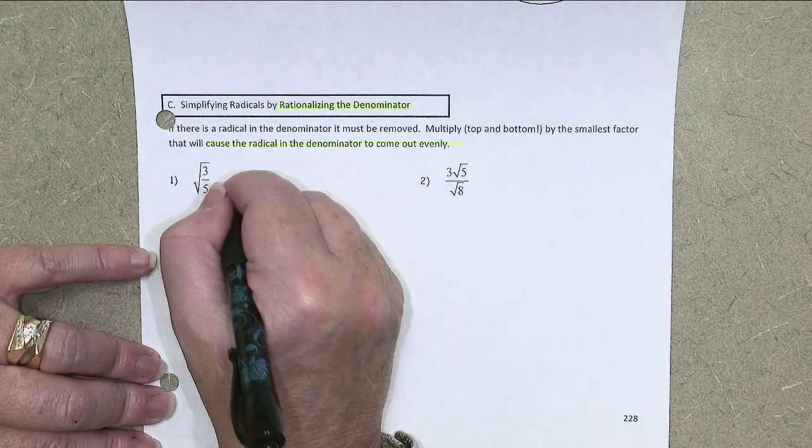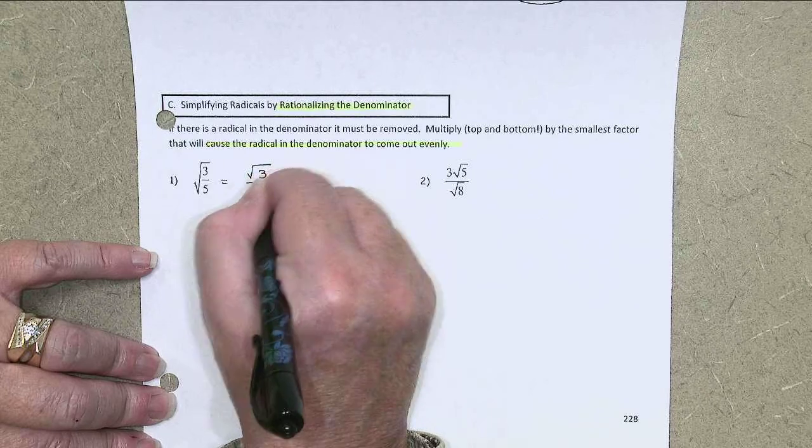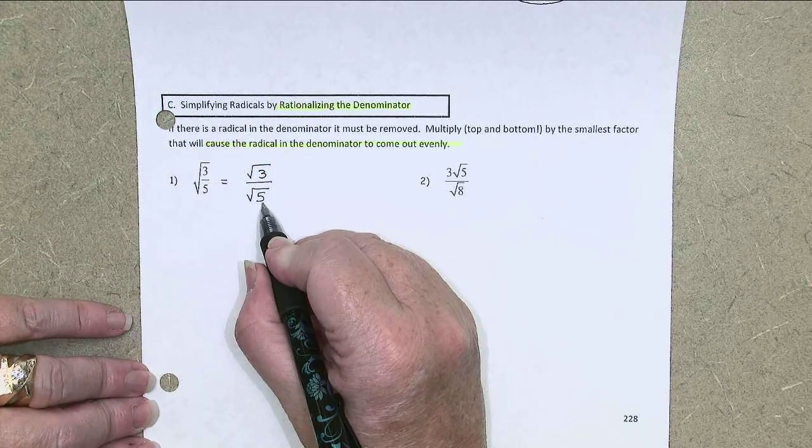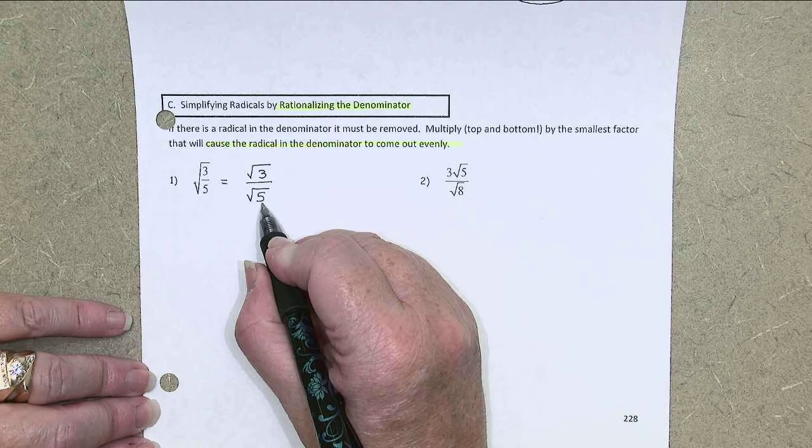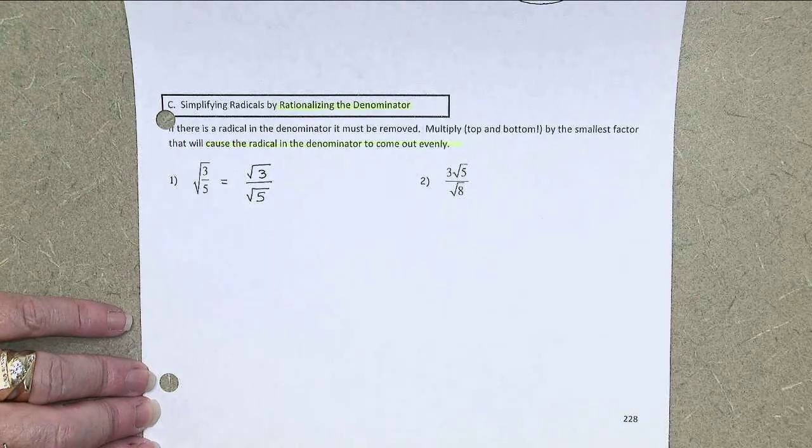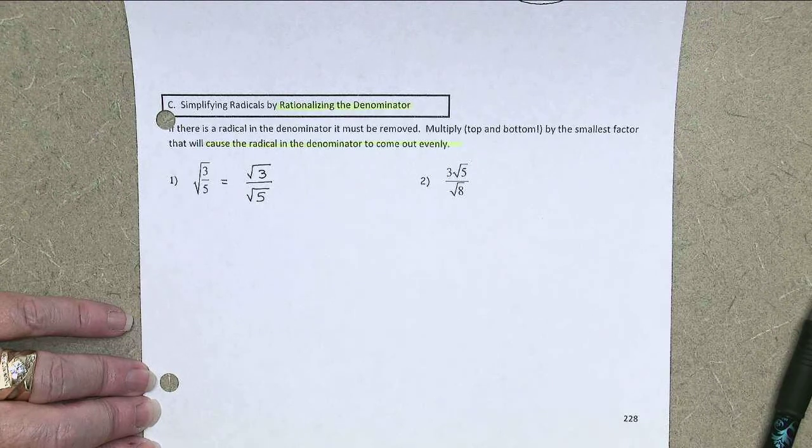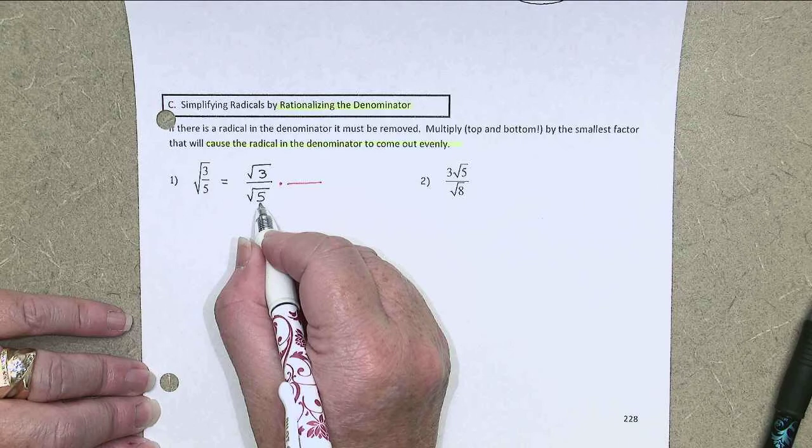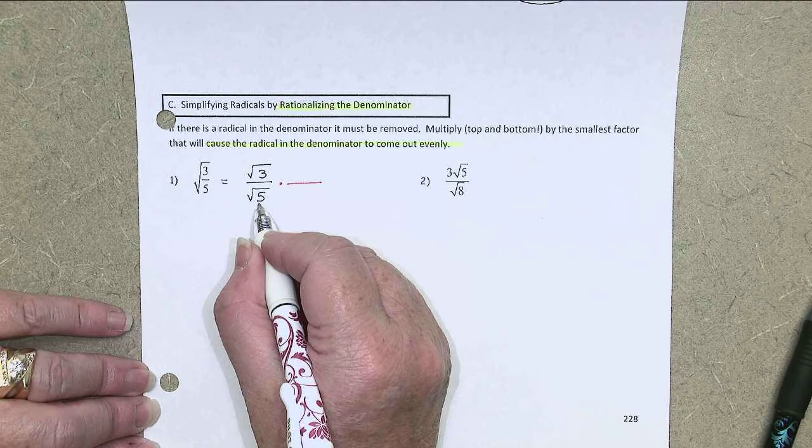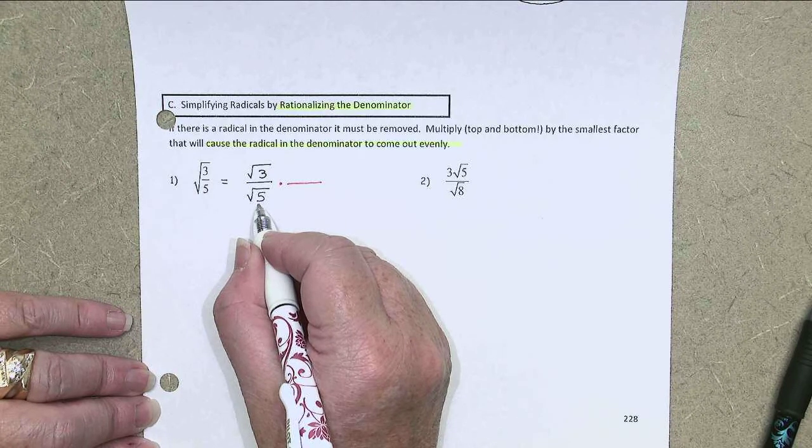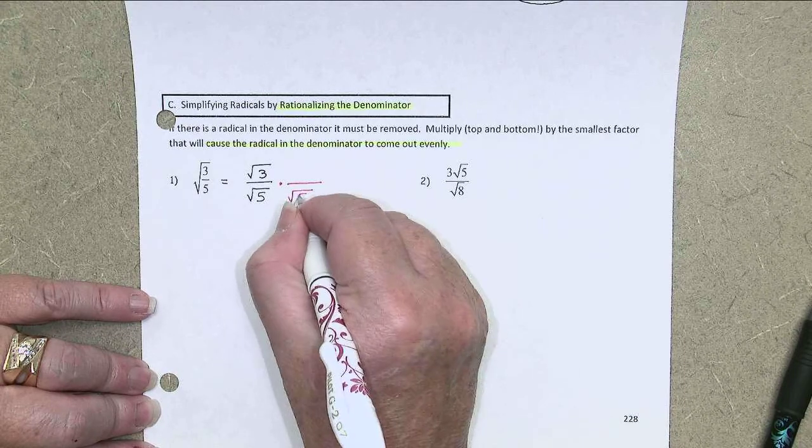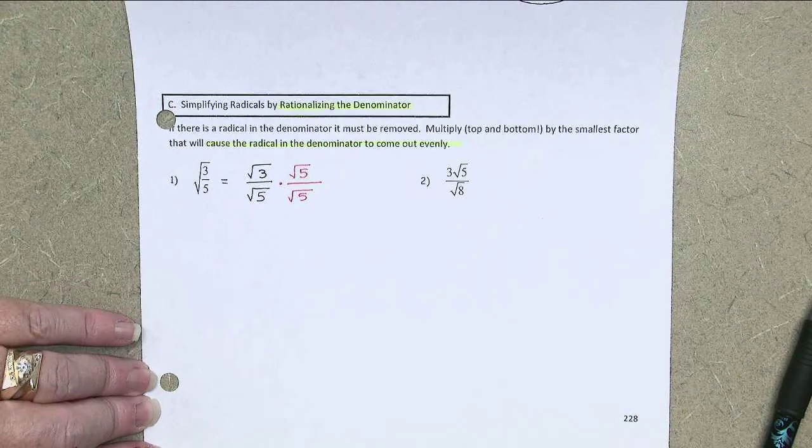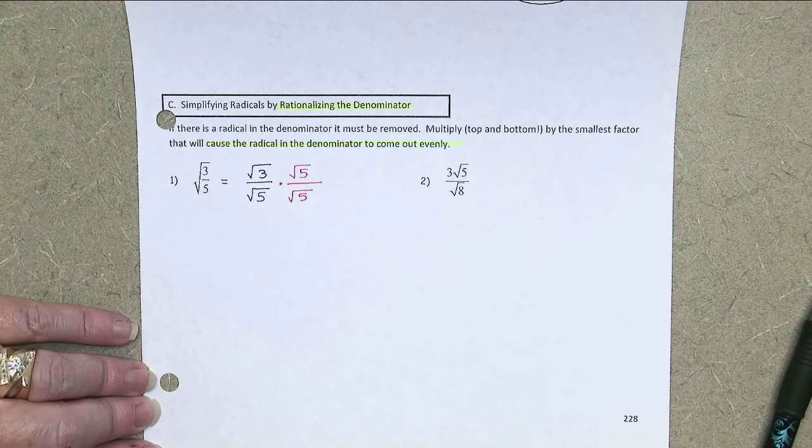I'm going to start by separating. This is the square root of 3 over the square root of 5. The square root of 5 certainly doesn't come out evenly right now, but I couldn't have reduced it with a 3 anyway, so I'm kind of stuck. What I'll do instead is say, if I multiply that 5 by another 5 to make it a 25, I will be able to take the square root.